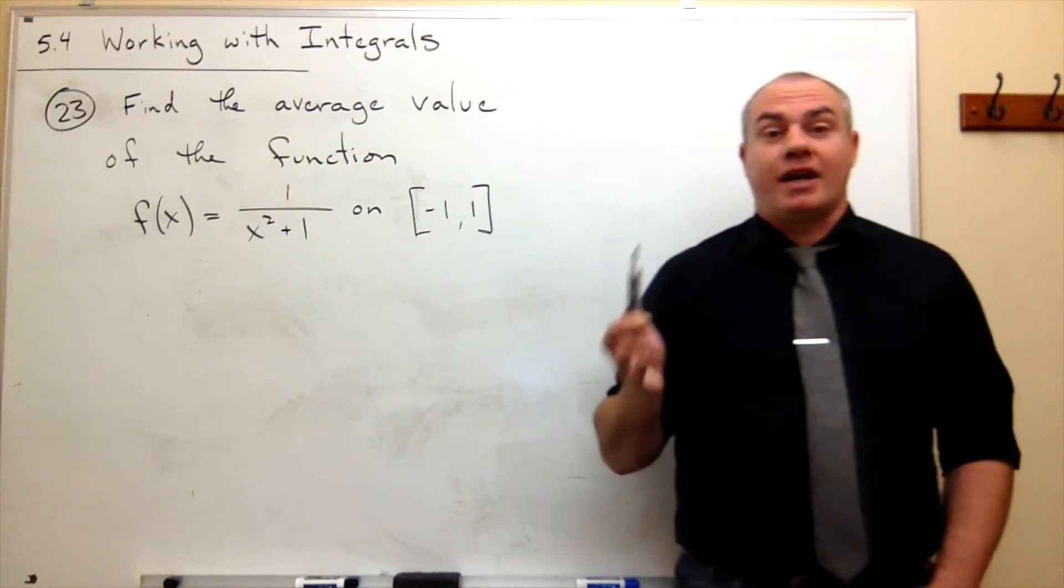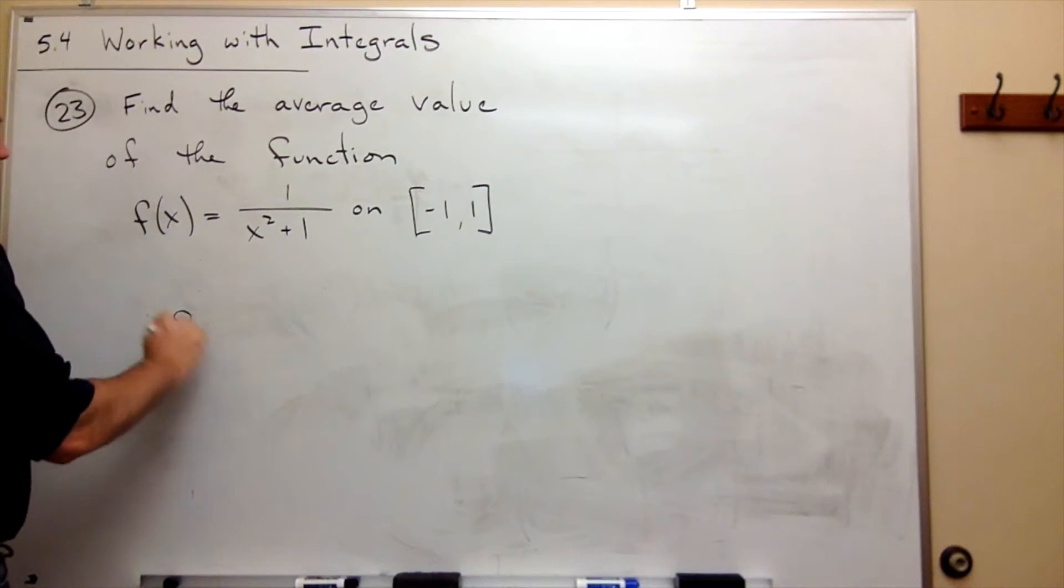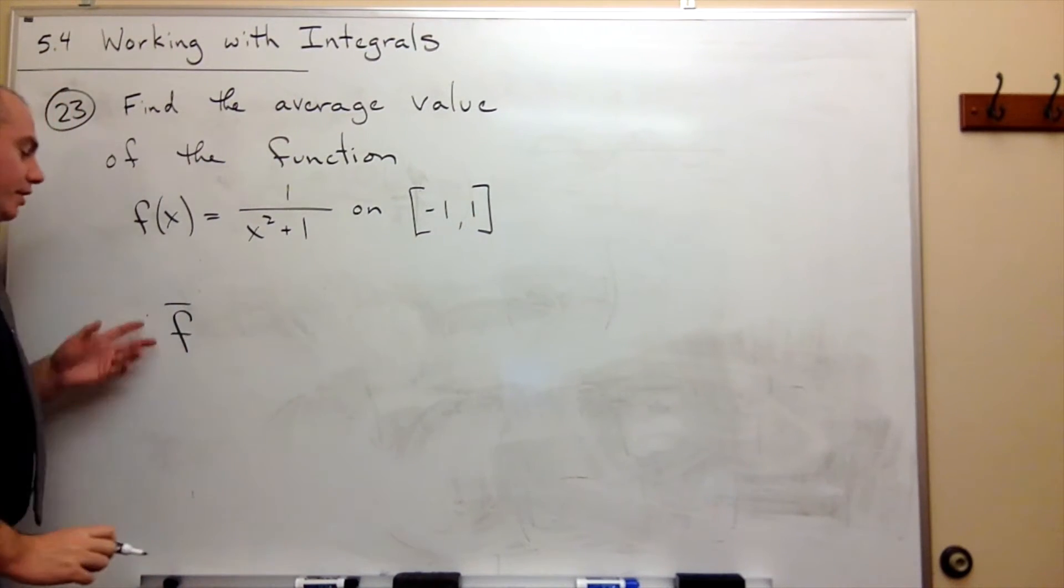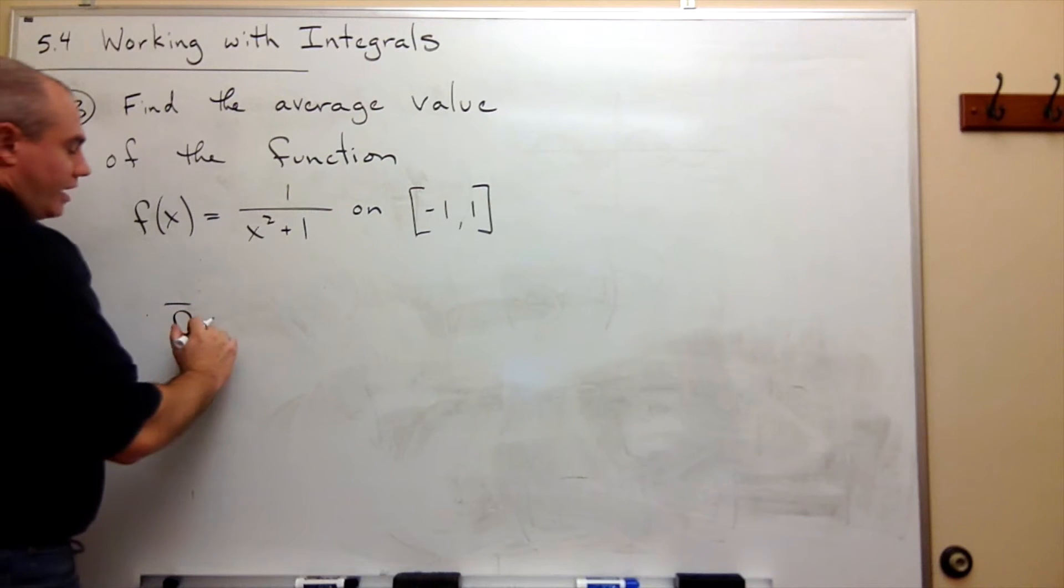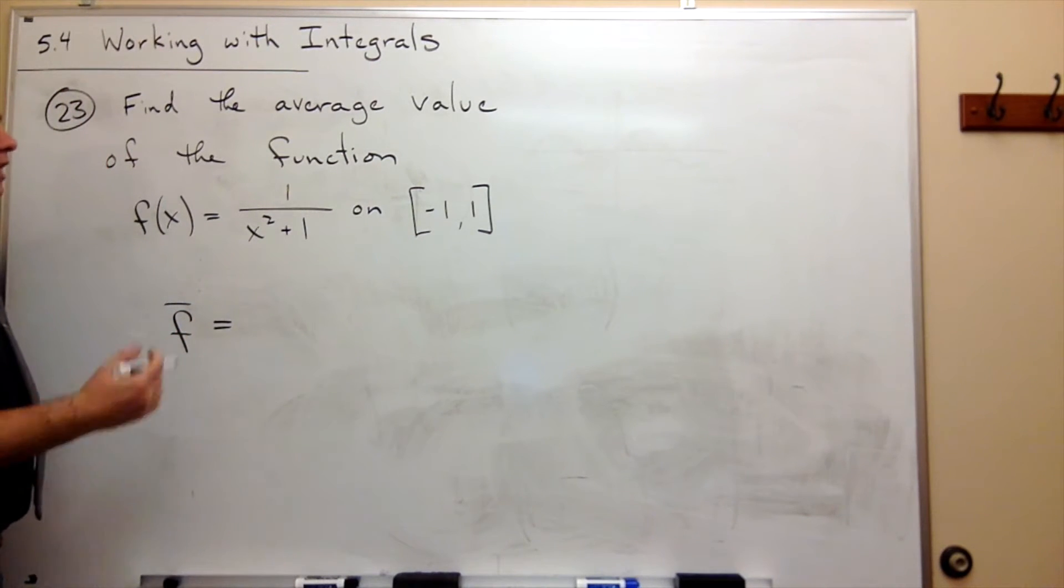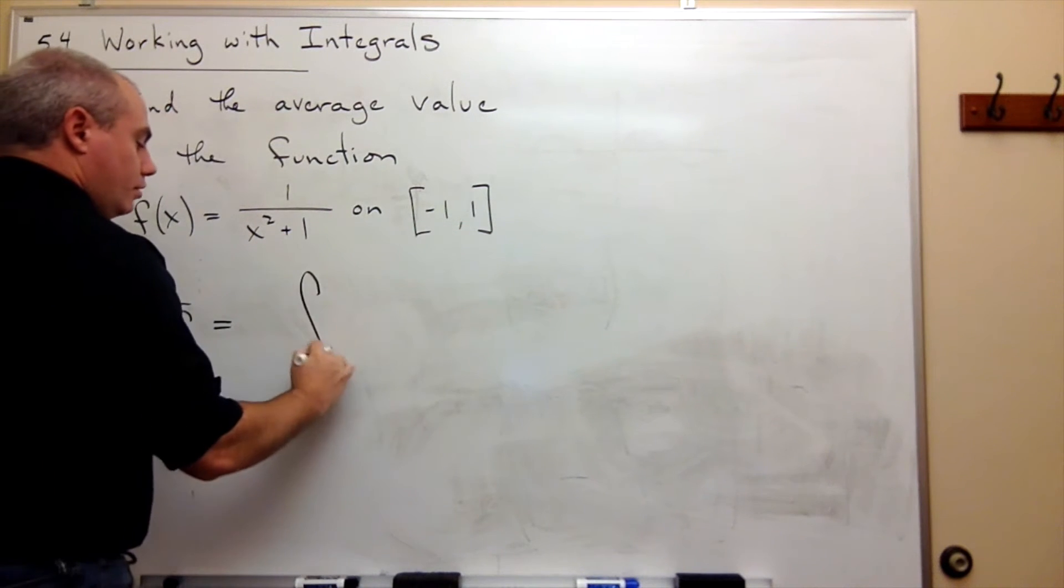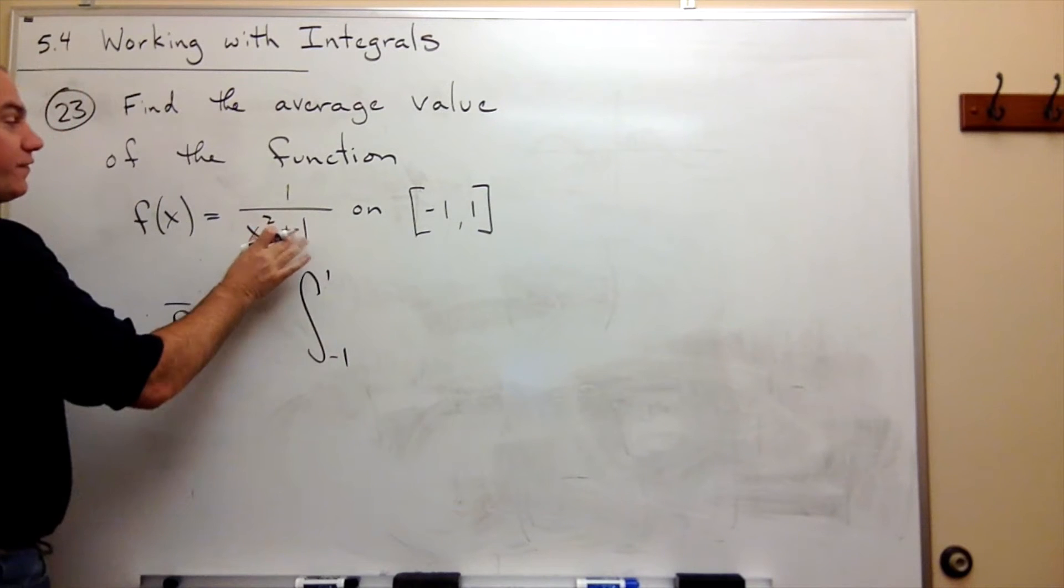So how do we find an average value? Sometimes the notation for this is f with a bar over it for the average value. But the way that we calculate this is we take the integral from negative 1 to 1 of this function,